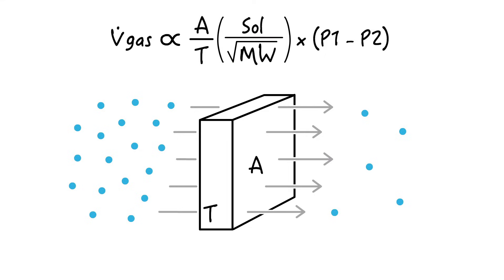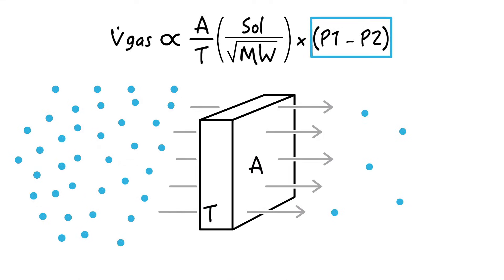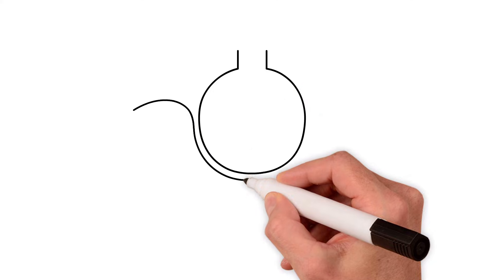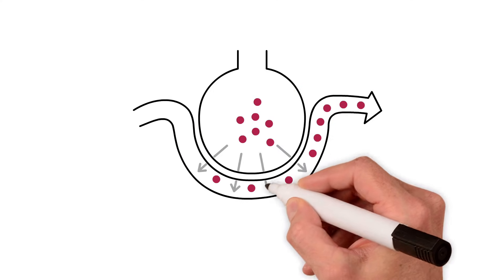Finally, diffusion is enhanced if there is a greater driving pressure across the membrane. And we can apply this to the movement of gas, let's say oxygen, across the alveolar capillary membrane.